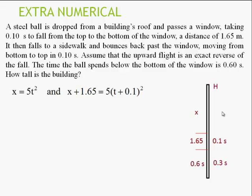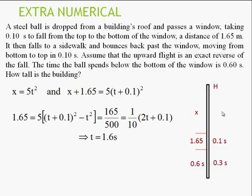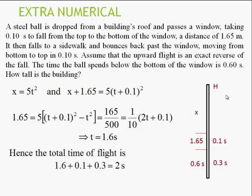Since the ball spends 0.6 seconds below the window and the motion is symmetric (upward = reverse of fall), half that time = 0.3 seconds is the fall from bottom of window to the ground. For height x above window: x = 5t². For x + 1.65: 5(t + 0.1)². Solving gives t = 1.6 seconds to reach the top of the window. Total time of flight = 1.6 + 0.1 + 0.3 = 2 seconds. Height = ½ × 10 × 2² = 20 meters. These numericals should give you conceptual strength in kinematics. All the best!